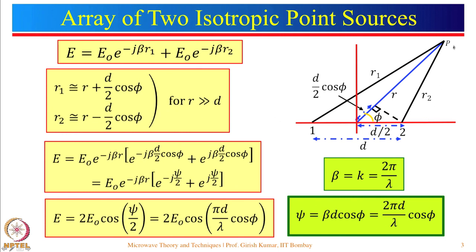r2 can be written approximately as r minus (d/2)cosφ, and similarly r1 is r plus (d/2)cosφ. Substituting these into the field expression, we can take out e^(−jβr), leaving the remaining terms. This particular term is denoted by ψ, which equals β·d·cosφ, and β equals 2π/λ. Many books also write k = β = 2π/λ, so please be aware of that symbol as well.